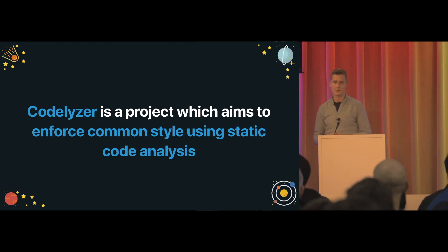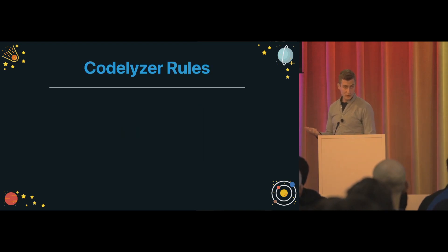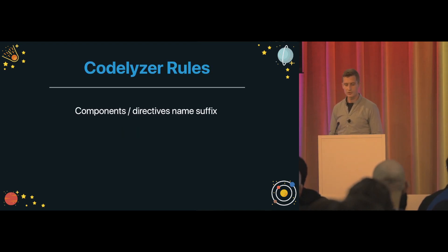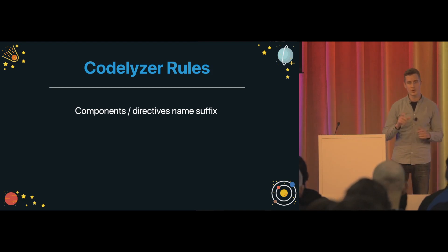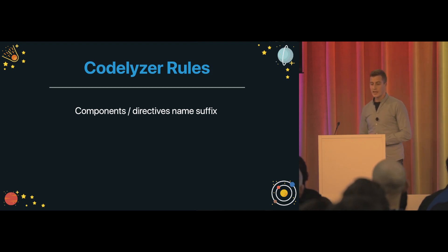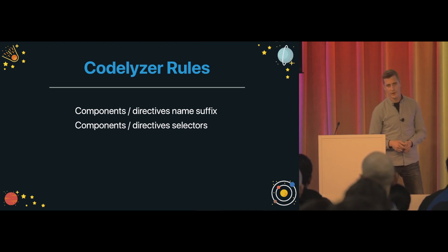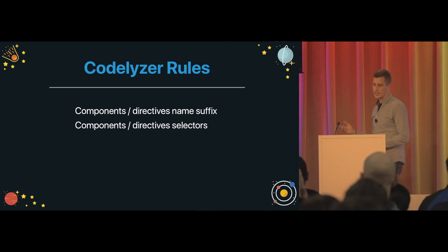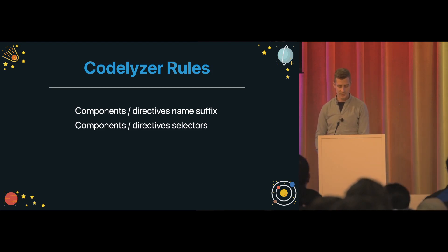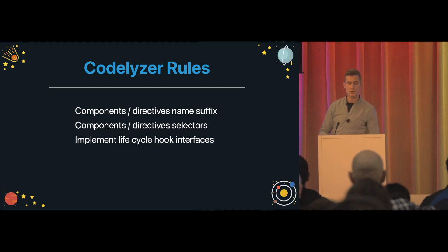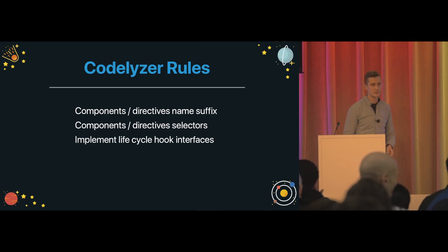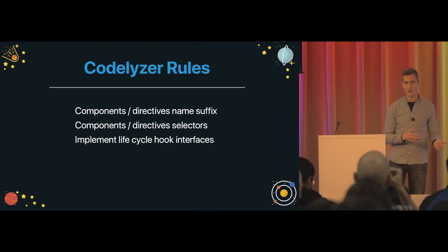Colalyzer also adds some additional features. A few of the rules: it can track your components by naming conventions, verifying if your components and directives have a specific name suffix. It also verifies if your selectors follow the style guides — your components should be used as elements and your directives as attributes, with camelCase or kebab-case naming. It also verifies if your directives implement the interfaces corresponding to the lifecycle hooks they use.